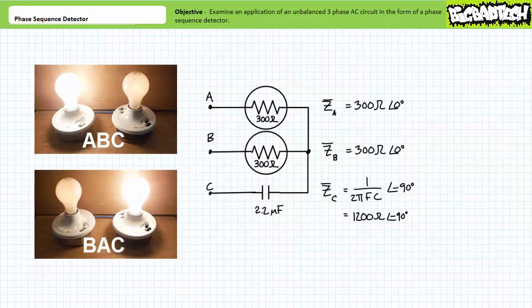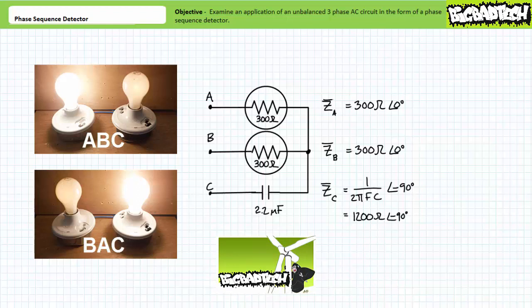Long story short, one of the light bulbs will light up if the phase sequence is ABC and the other will light up if the sequence is BAC. The capacitor in the third branch purposely establishes an imbalance such that current continues to circulate throughout the unbalanced Y configuration and voltage across the two bulbs will not be the same. As a result, the bulb with the leading phase appears brighter. A user simply plugs the three unknown primary wires into the phase sequence detector and gets immediate feedback. A phase sequence detector is a quick and easy means of determining phase sequence, although the theory behind its operation isn't — though it's not that hard if you understand the superposition theorem. Let's use the remainder of this lecture to practice the analysis techniques demonstrated in the unbalanced Y configurations lecture.